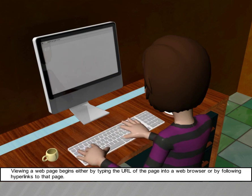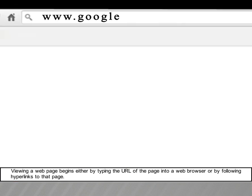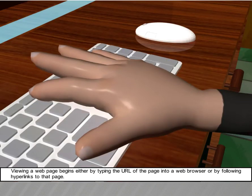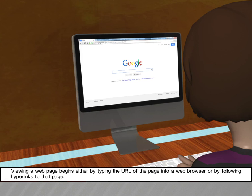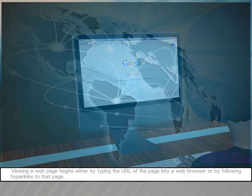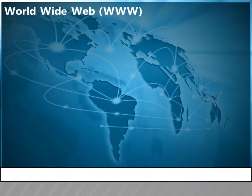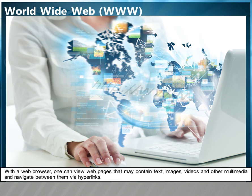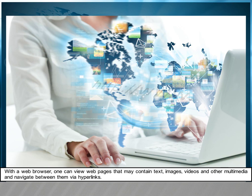Viewing a web page begins either by typing the URL of the page into a web browser or by following hyperlinks to that page. With a web browser, one can view web pages that may contain text, images, videos and other multimedia and navigate between them via hyperlinks.